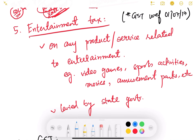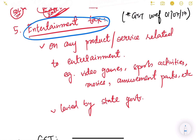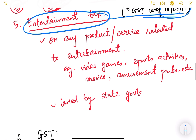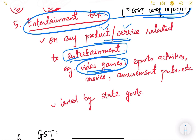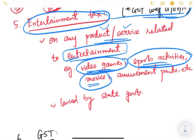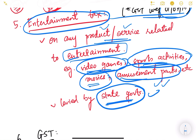The next kind of indirect tax is entertainment tax, which is subsumed under GST from July 2017. Entertainment tax is imposed on any product or service related to entertainment — gaming, video game parlors, game centers, sports activities, movies in theaters, amusement parks, etc. It is levied by respective state governments, with different rates for different states, but now it is subsumed under GST.